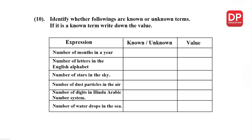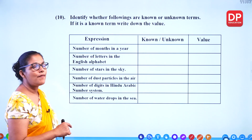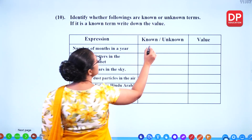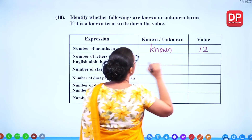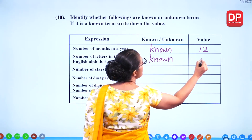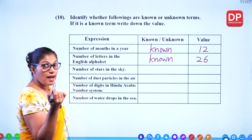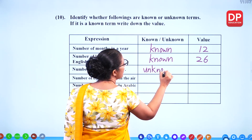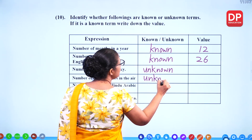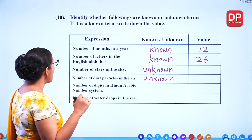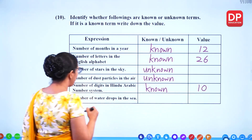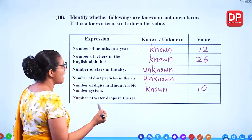Identify whether the following are known or unknown terms, and if known, write down the value. Number of months in a year — known, twelve. Number of letters in the English alphabet — known, twenty-six. Number of stars in the sky — unknown. Number of dust particles in the air — unknown. Number of digits in the Hindu-Arabic number system — known, ten digits (zero to nine). Number of water drops in the sea — we can't count, so that's unknown.